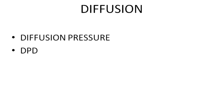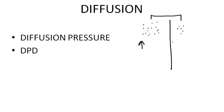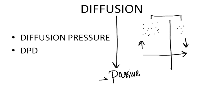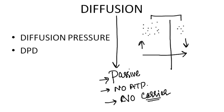Diffusion is simple — it means molecules transport from high concentration to low concentration. In diffusion: it is passive transport, no ATP is used, and no carrier is used. This means the diffusion process is non-specific and non-selective. Molecules will diffuse until equilibrium is achieved.